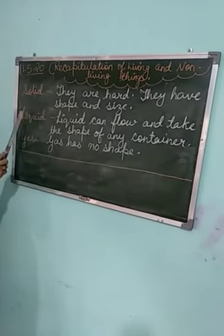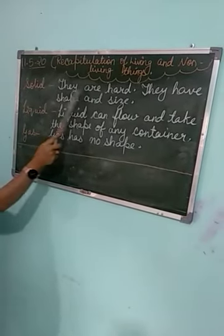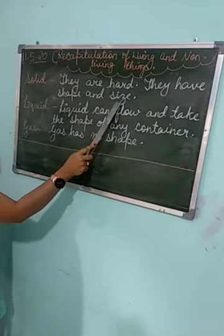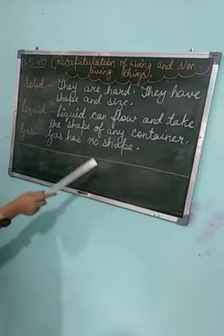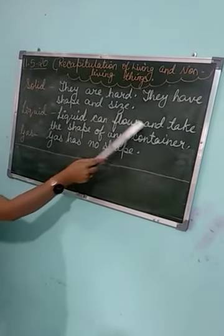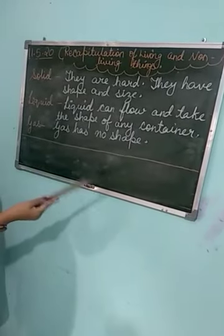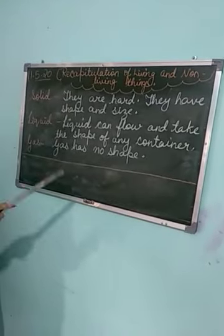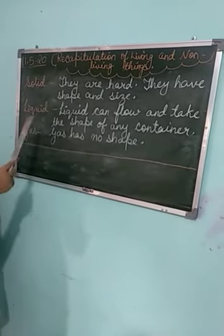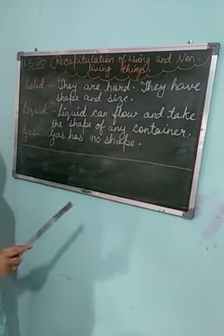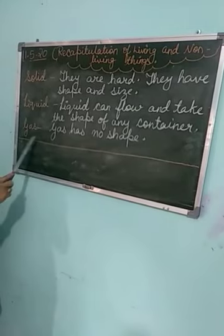I have explained the definitions of solid, liquid, and gas. Number one is solid — they are hard, they have shape and size. उनकी अलग-अलग shape और अलग-अलग size होती है. Next is liquid — liquid can flow and take the shape of any container. For example, water — if you pour water in a glass, it takes the shape of the glass; if you fill it in a bottle, it takes the shape of the bottle. Next is gas — gas has no shape or size.